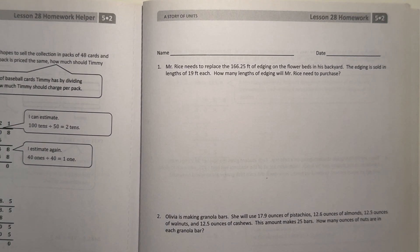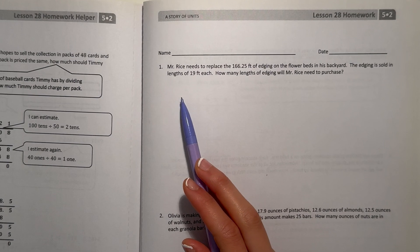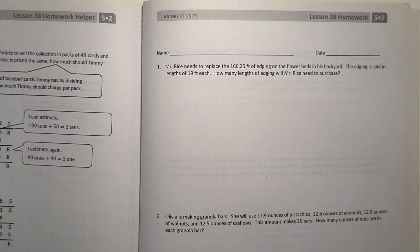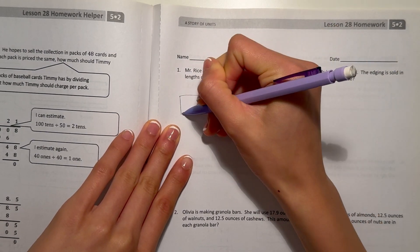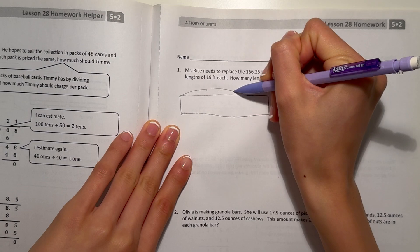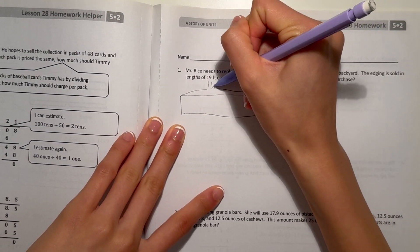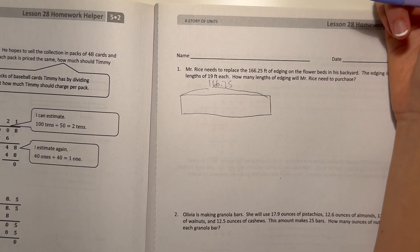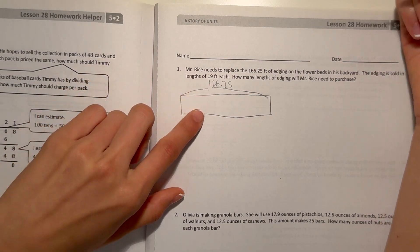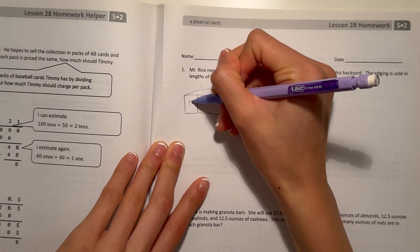Number one. Mr. Rice needs to replace the 166.25 feet of edging on the flower beds in his backyard. The edging is sold in lengths of 19 feet each. How many lengths of edging will Mr. Rice need to purchase?